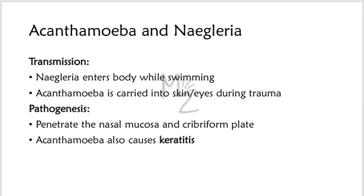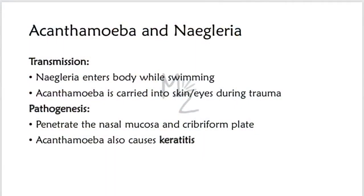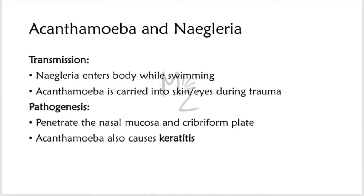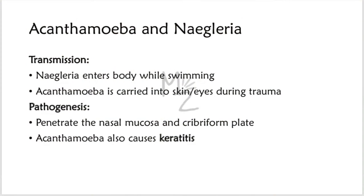Transmission and pathogenesis: Naegleria trophozoites usually enter the body through mucous membranes while an individual is swimming. Acanthamoeba is carried into the skin or eyes during trauma. These organisms can penetrate the nasal mucosa and cribriform plate to produce a fulminant meningitis and encephalitis that are usually fatal. Acanthamoeba also causes keratitis — an inflammation of the cornea that occurs primarily in those who wear contact lenses. With increasing use of contact lenses, keratitis has become the most common disease associated with Acanthamoeba infection.